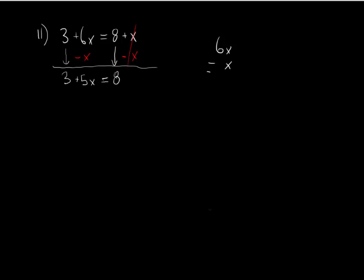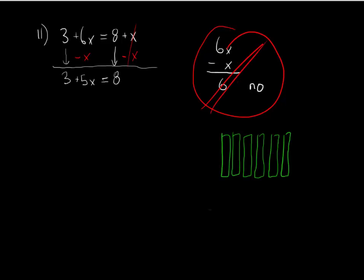What we've really got there are 6 positive bars and 1 negative bar. 1 positive bar and negative bar come together to make a 0 pair, and only 5 bars are left over. Now we can continue solving.